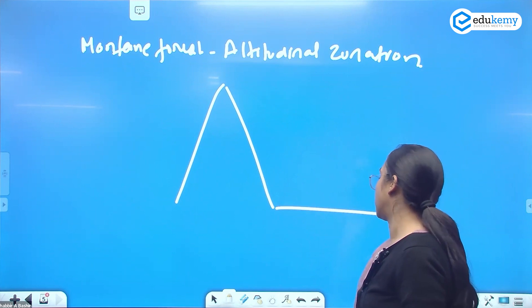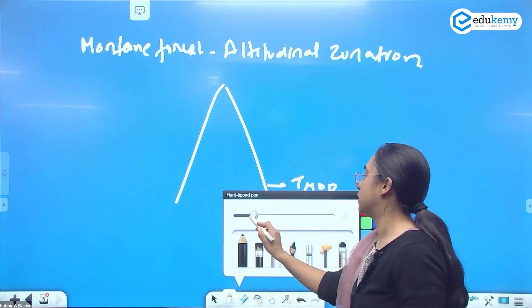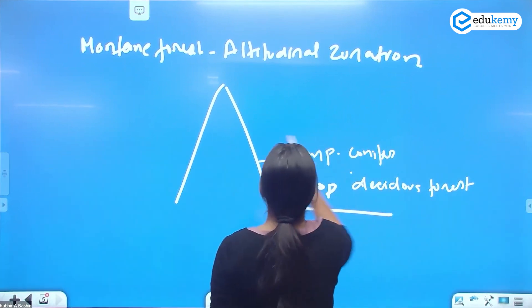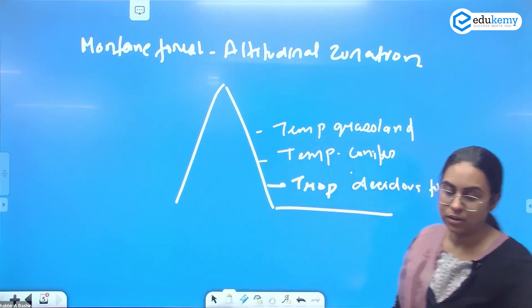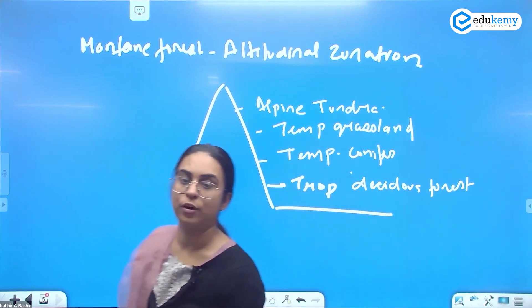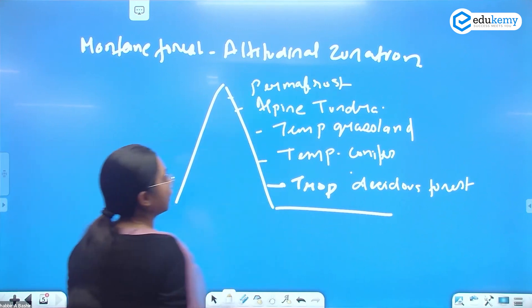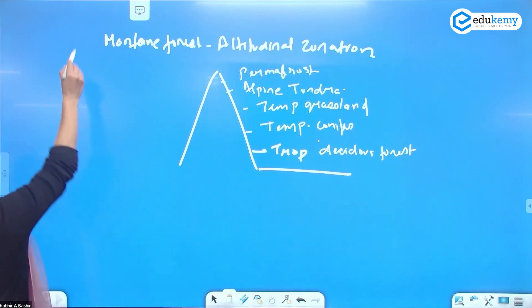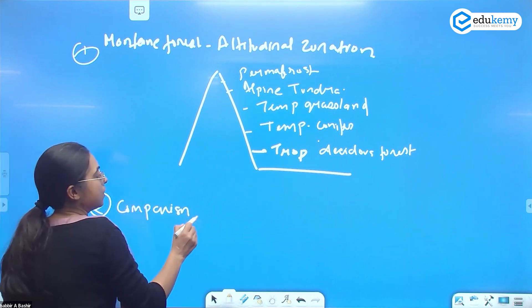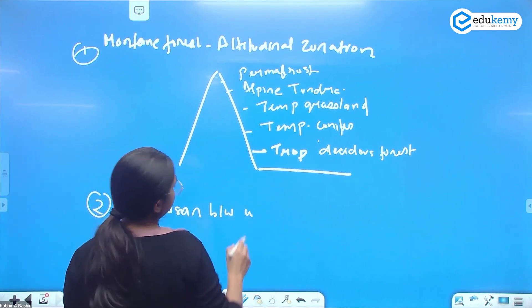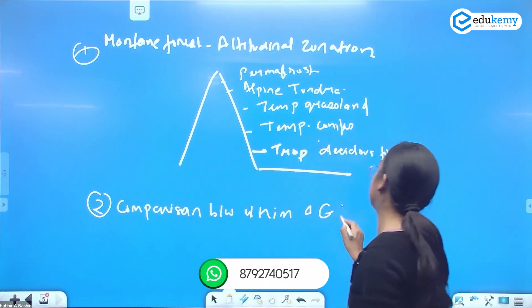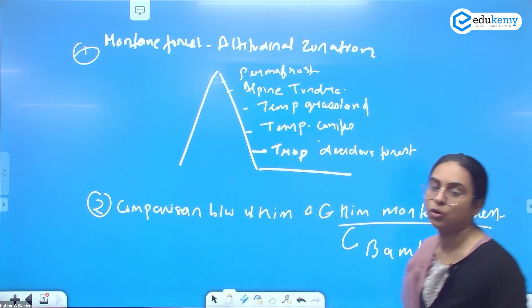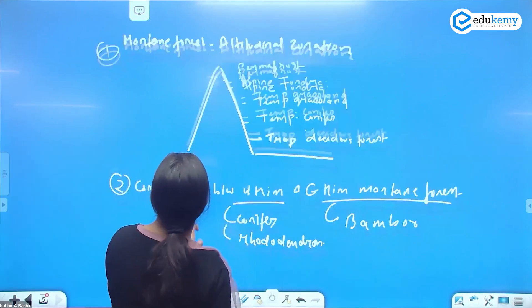The altitudinal zonation in the montane forest goes as follows: at the base we have tropical deciduous forest, then temperate conifers, then temperate grasslands, then alpine tundra, and finally permafrost at the top. You can see there is significant altitudinal variation in the montane forest. The second point can be the comparison between the montane forest in Western Himalayas and Eastern Himalayas — in the east you have bamboo, in the west you have rhododendrons, conifers, and oak.